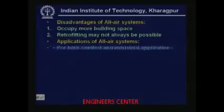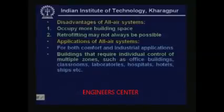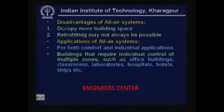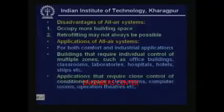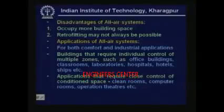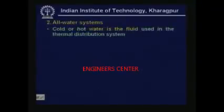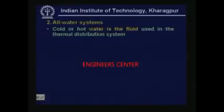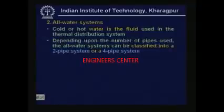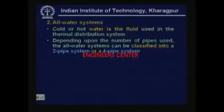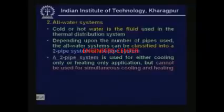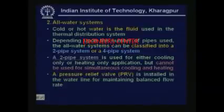What are the applications of all air systems? They are applied for both comfort as well as industrial air conditioning, and used in buildings that require individual control of multiple zones such as office buildings, classrooms, laboratories, and hospitals. They are also used in applications that require close control of the conditioned space, such as clean rooms, computer rooms, and operation theaters. Now let us look at all water systems. In all water systems, cold or hot water is the fluid used in the thermal distribution system. Depending on the number of pipes used, all water systems can be classified into a 2-pipe system or a 4-pipe system. A 2-pipe system is used for either cooling only or heating only, but cannot be used for simultaneous cooling and heating. A pressure relief valve (PRV) is installed in the water line for maintaining balanced flow rate.